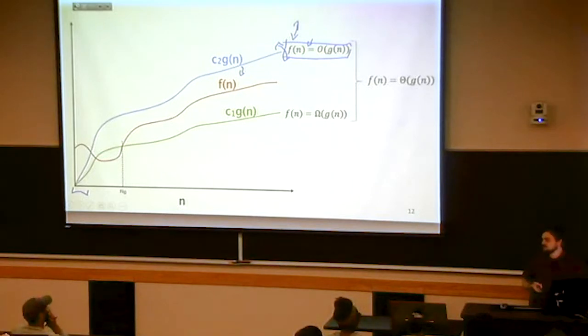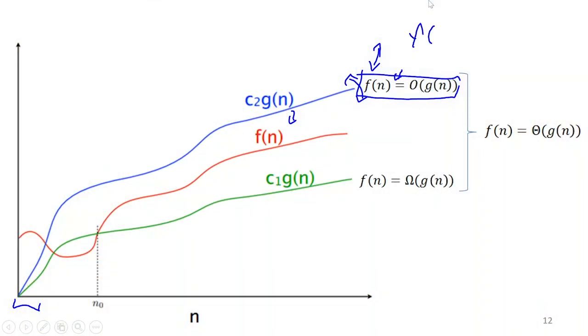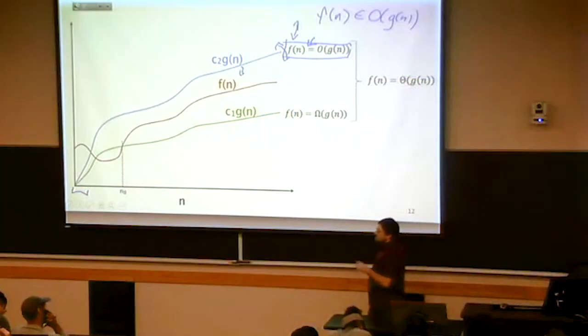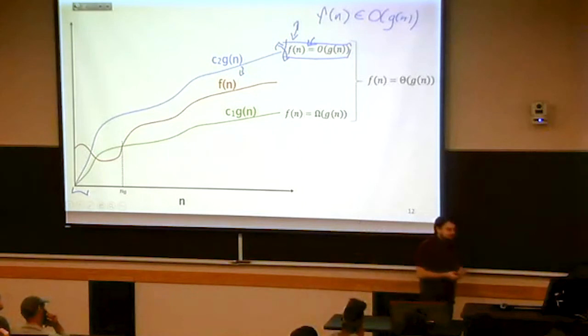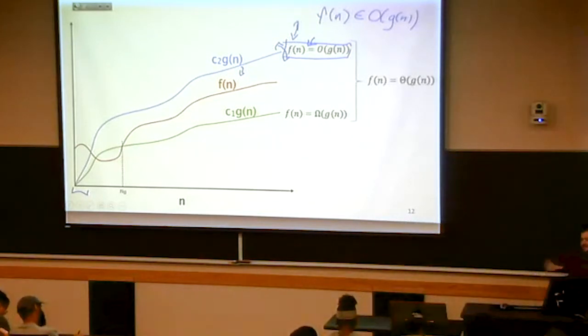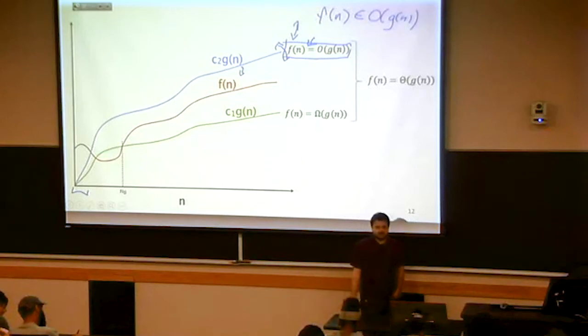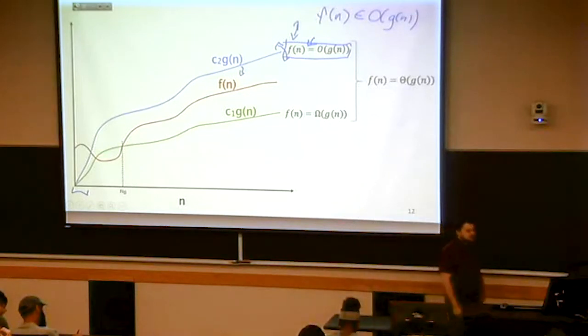Most people use equal signs for this. Most people say F of N equals big O of G of N. So while that is the most common notation for this, it is actually an incorrect notation for this. The more correct notation for this would be F of N belongs to big O of G of N. Element of is more correct, equals to is more common. Not my decision. Okay, so if we can find some tilt or shift to do to G so that eventually it's going to always be above F, then we say F of N belongs to big O G of N.